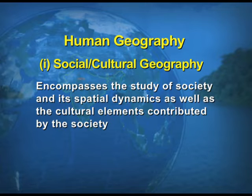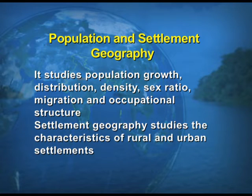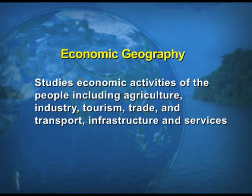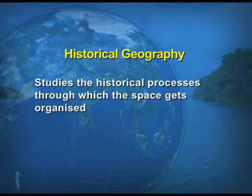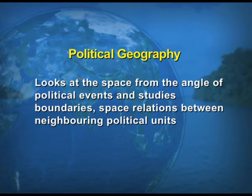Under human geography, we have social and cultural geography, population and settlements, and economic geography. There is also historical and political geography. In population and settlements, we talk about rural and urban geography, and within those we have different aspects such as migration. There are also methods and techniques by which we study geography, namely cartography and field techniques.